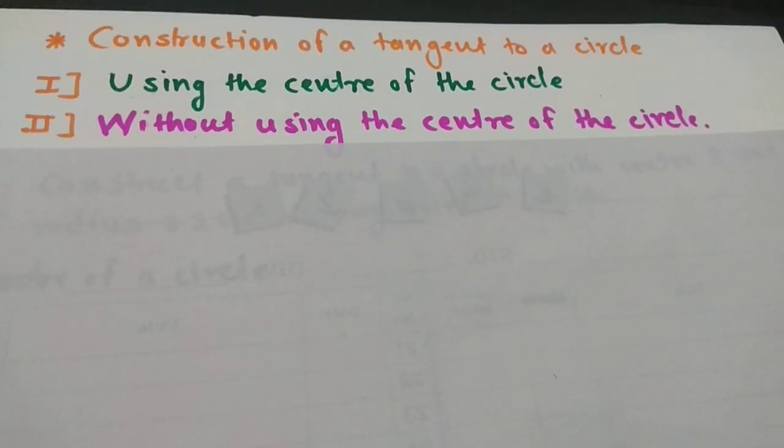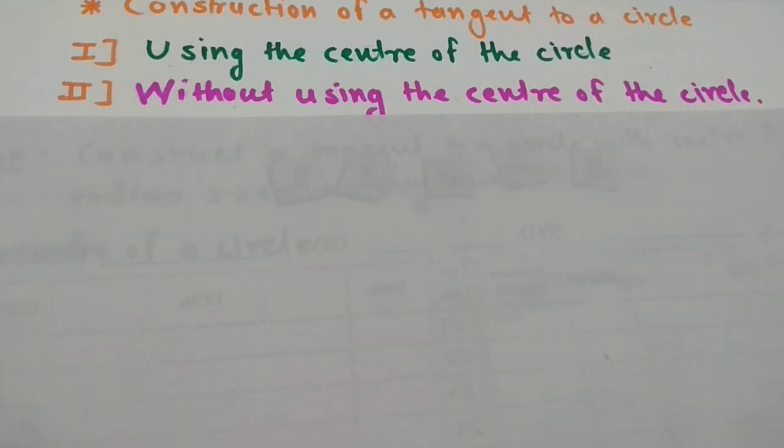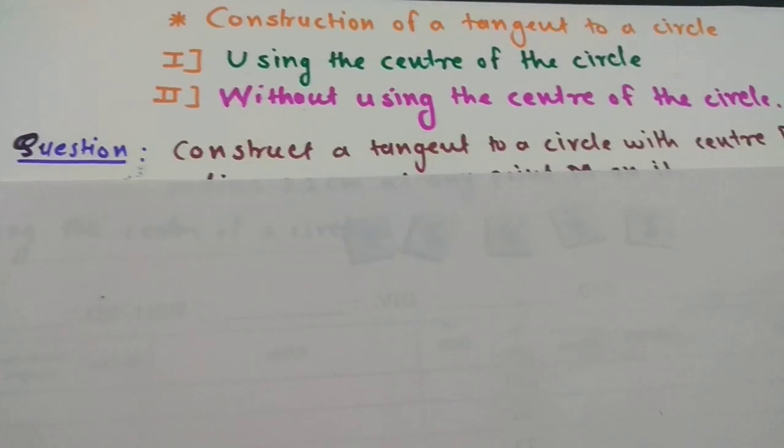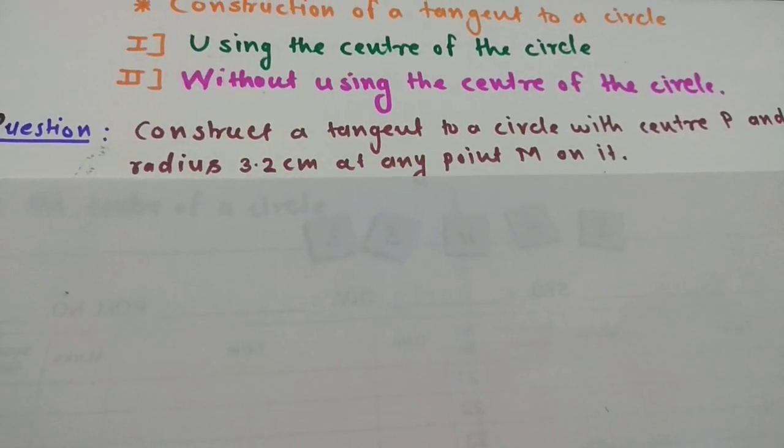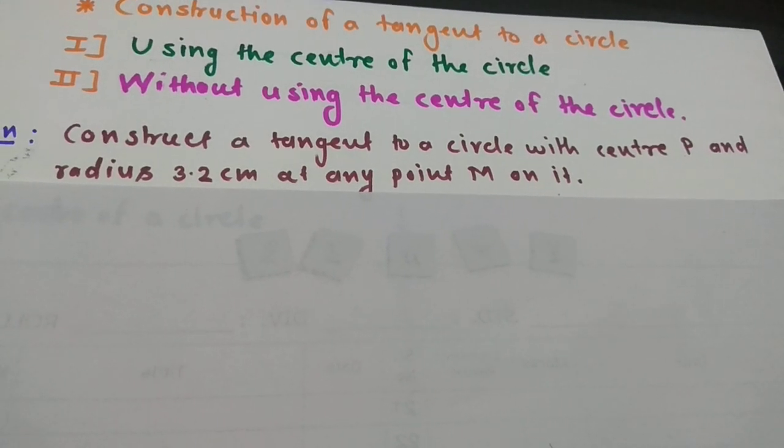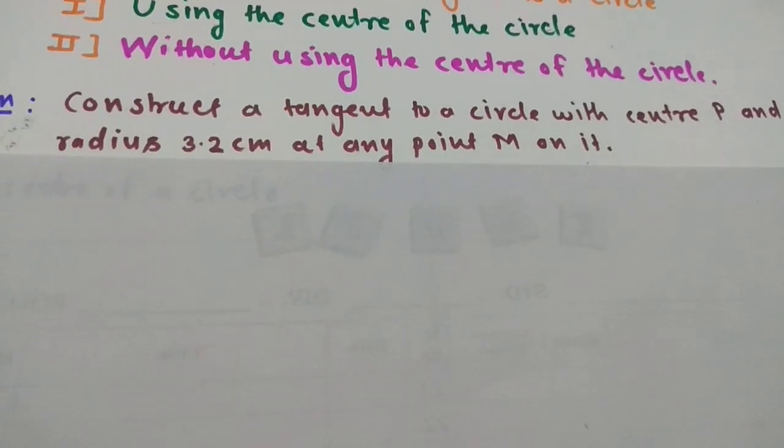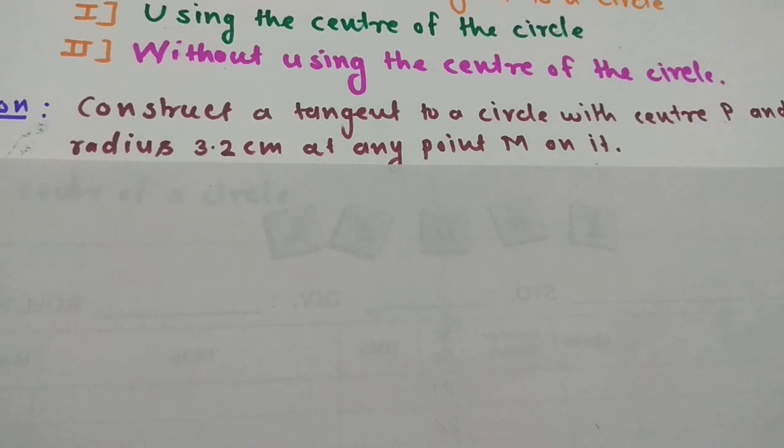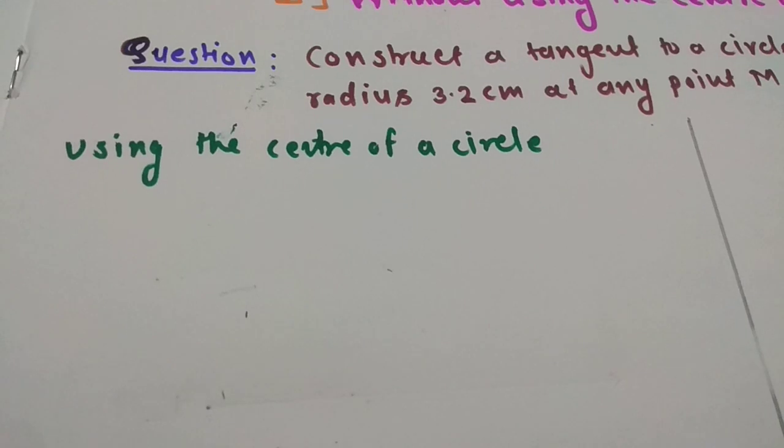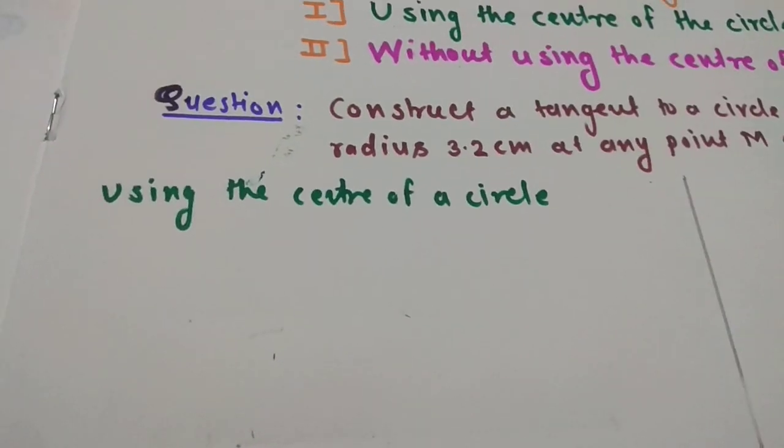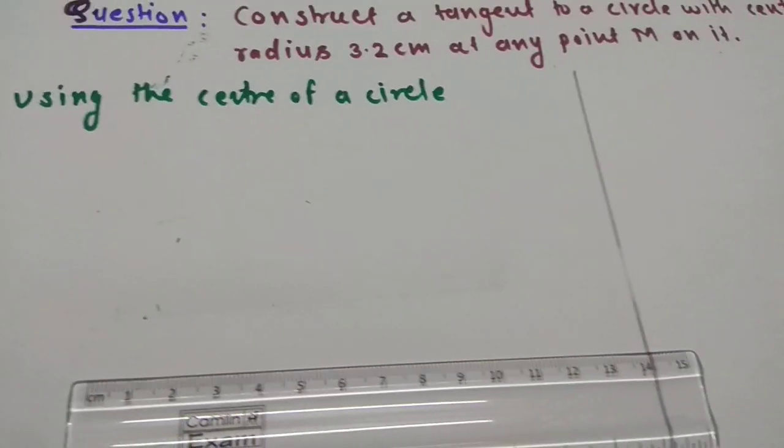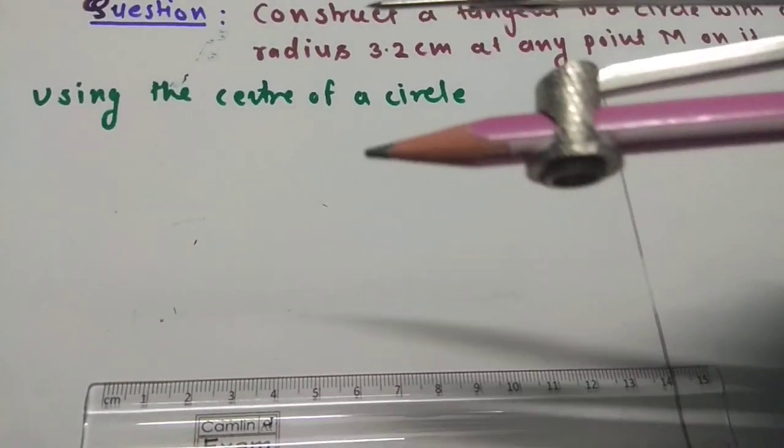Let's look at a question for practice. That is, construct tangent to a circle with center P and radius 3.2 centimeter at any point M on it. Now construct tangent using center of the circle.